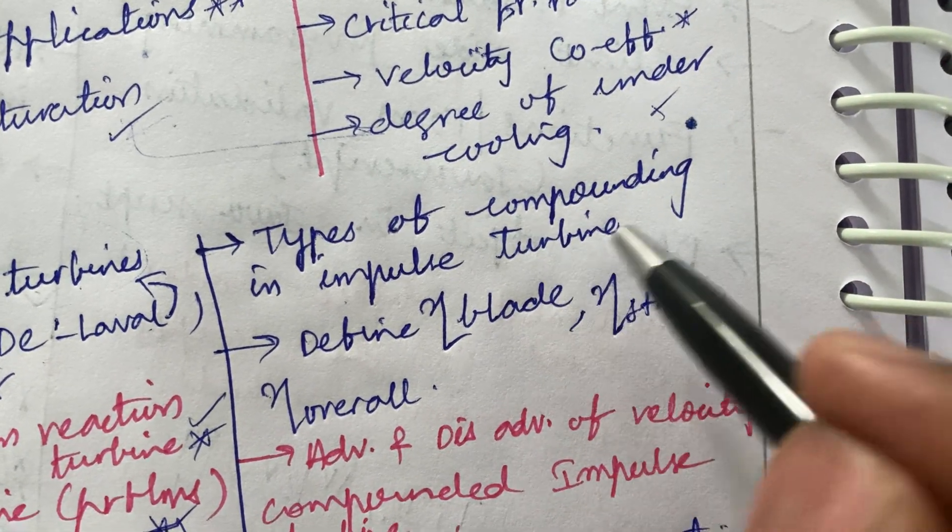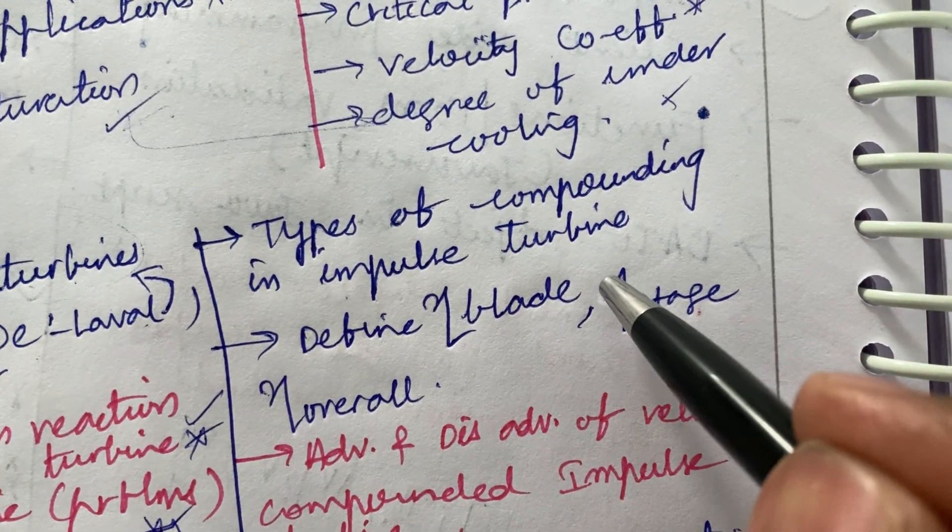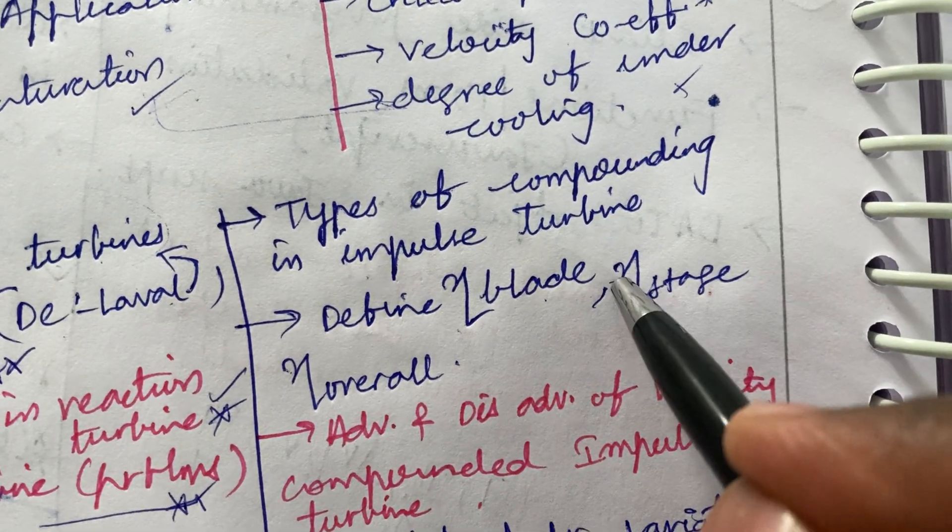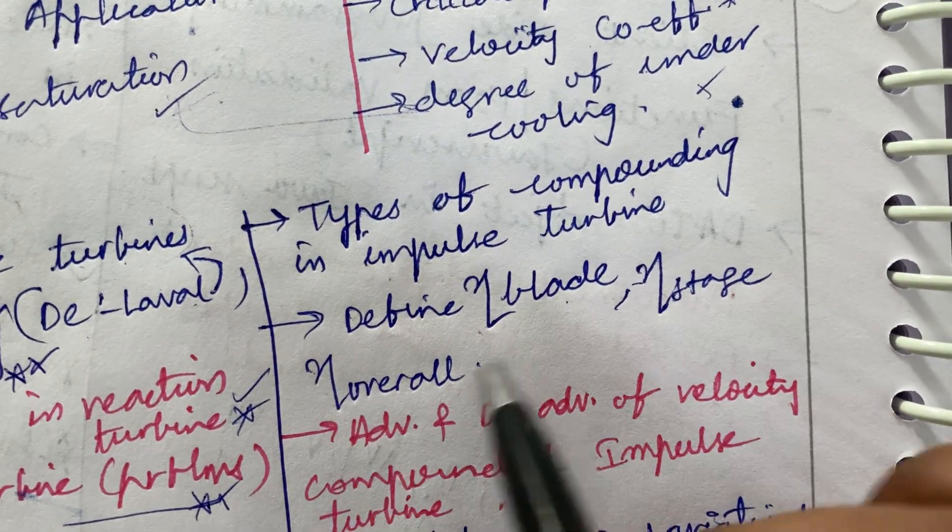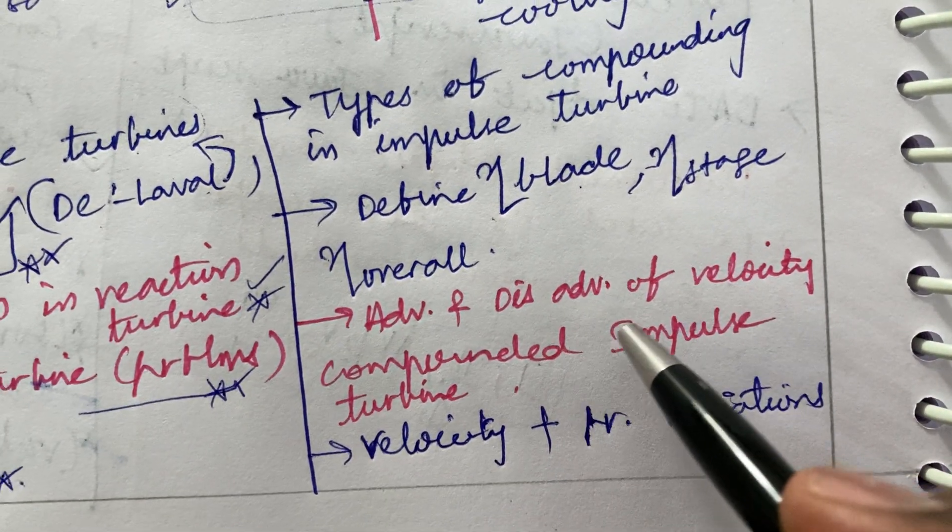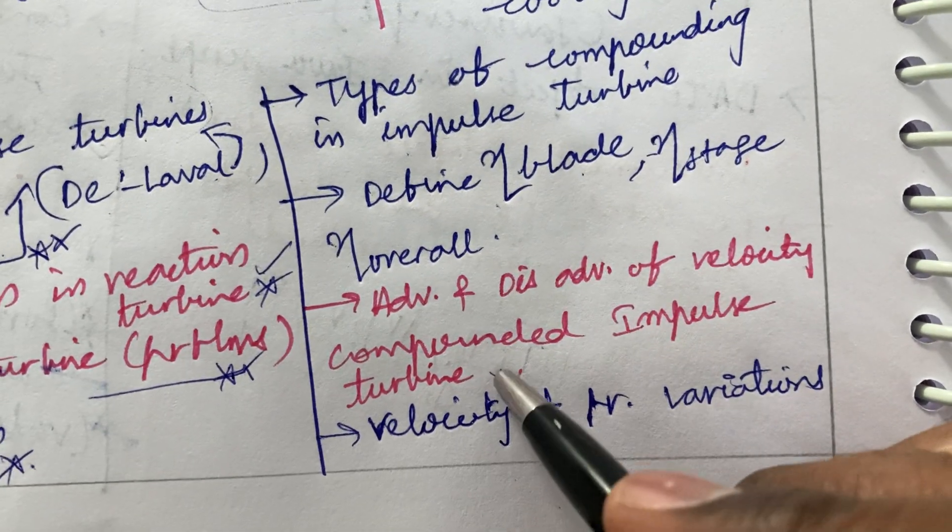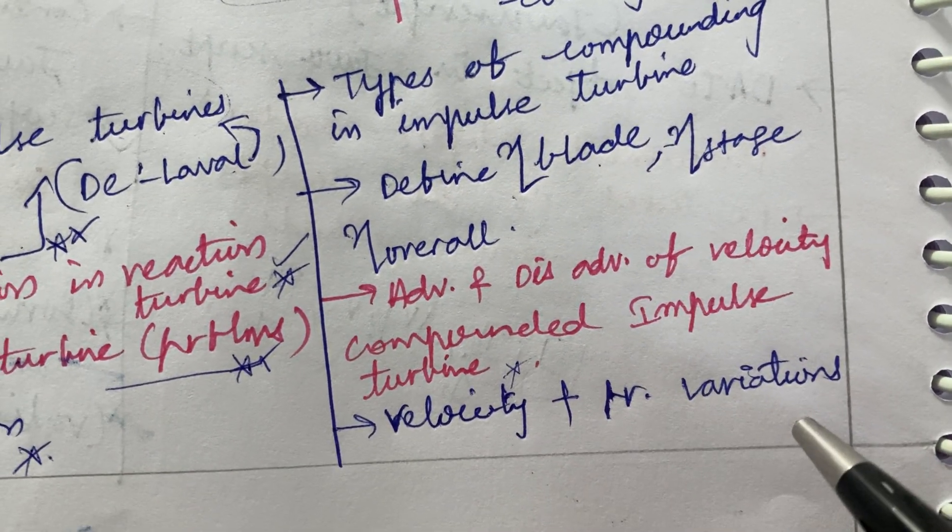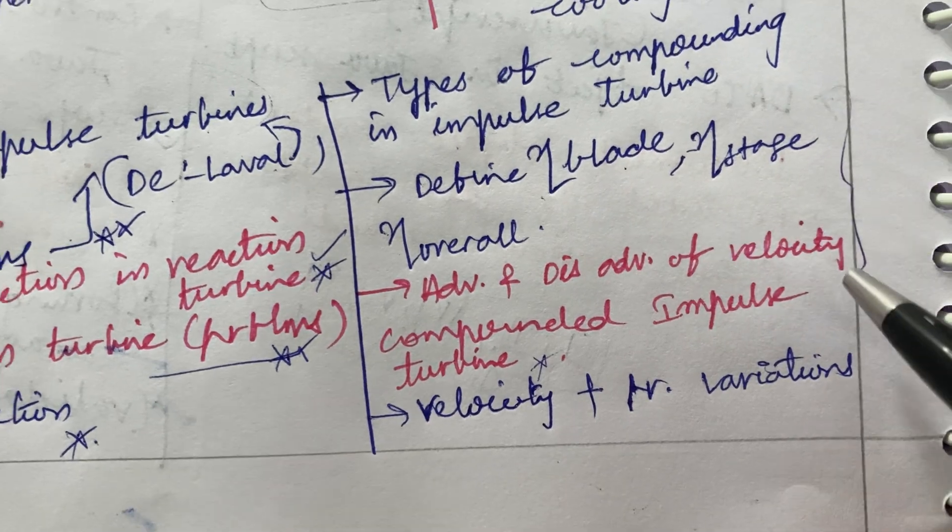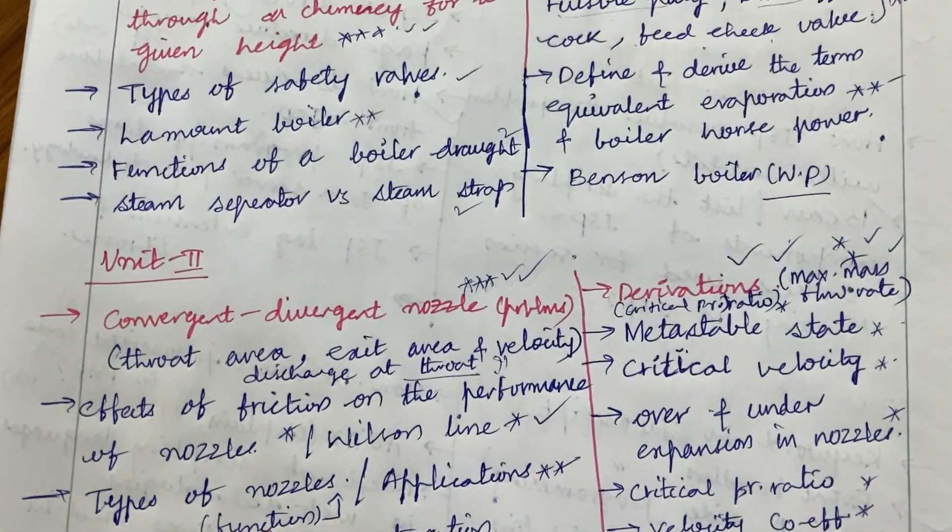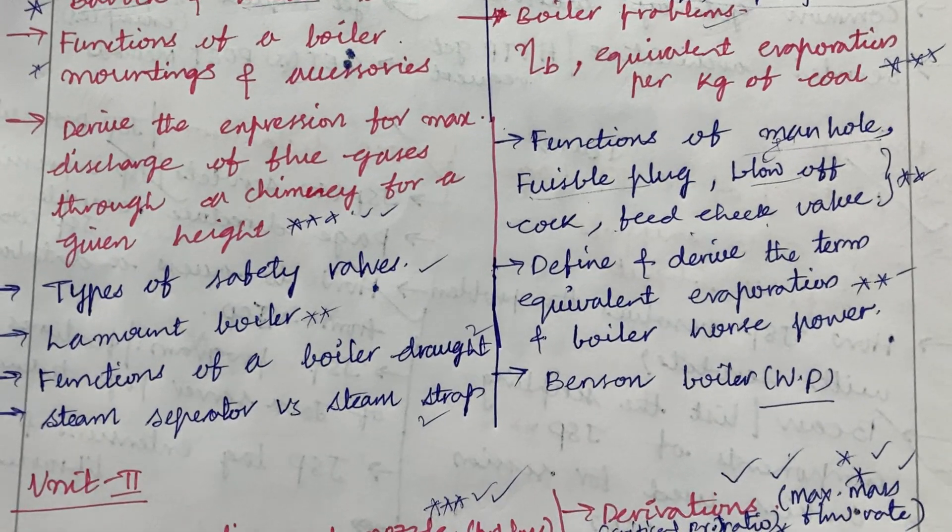Types of compounding in impulse turbine and define the efficiency - blade efficiency, stage efficiency and overall efficiency. The terms as well as the advantages and disadvantages of velocity compounded impulse turbines as well as velocity and pressure variations. These all are said to be top most questions which I have taken into consideration from unit 2, unit 3 as well as unit 1. Please do work out all these.